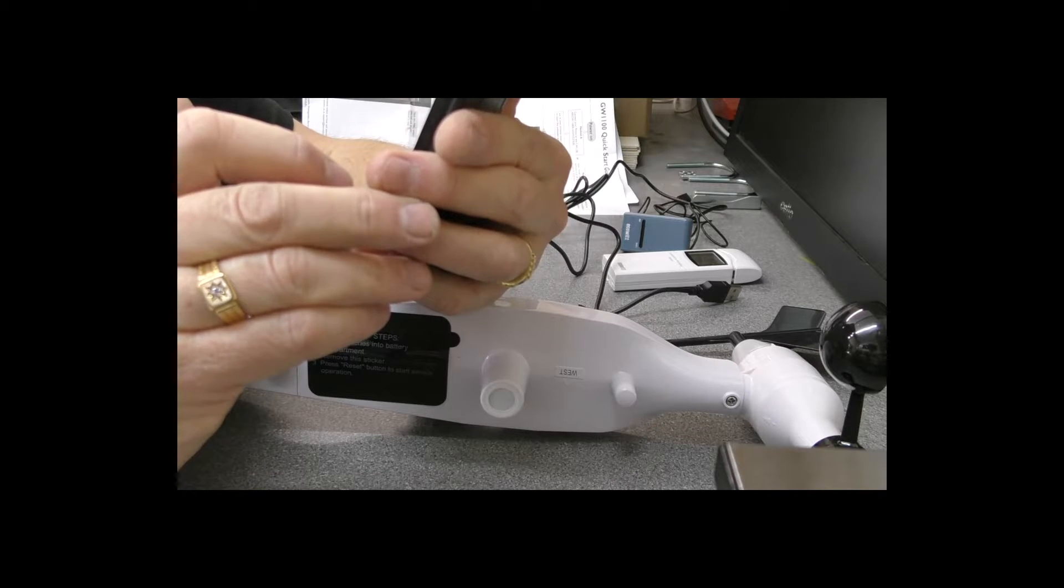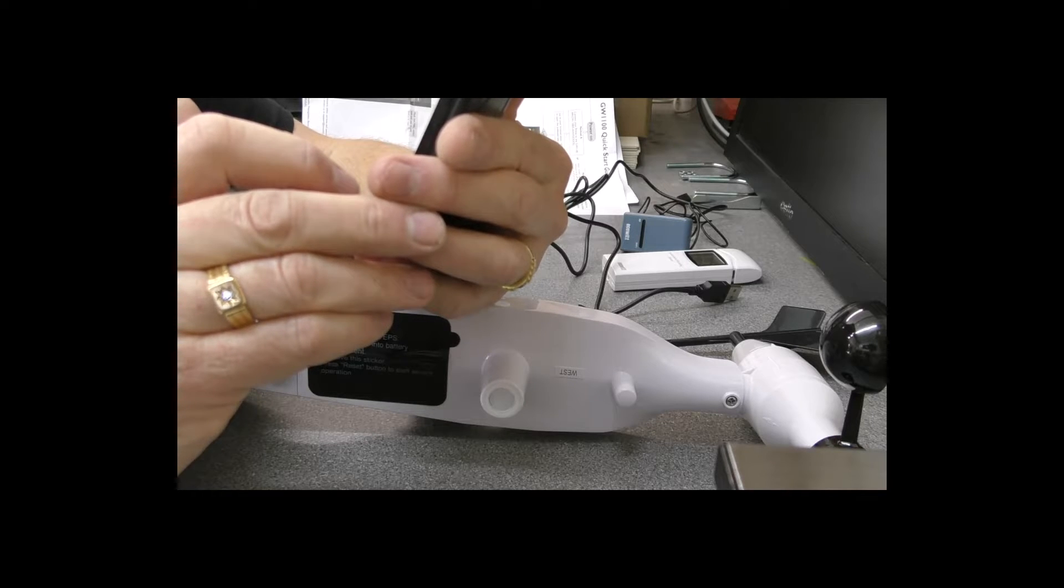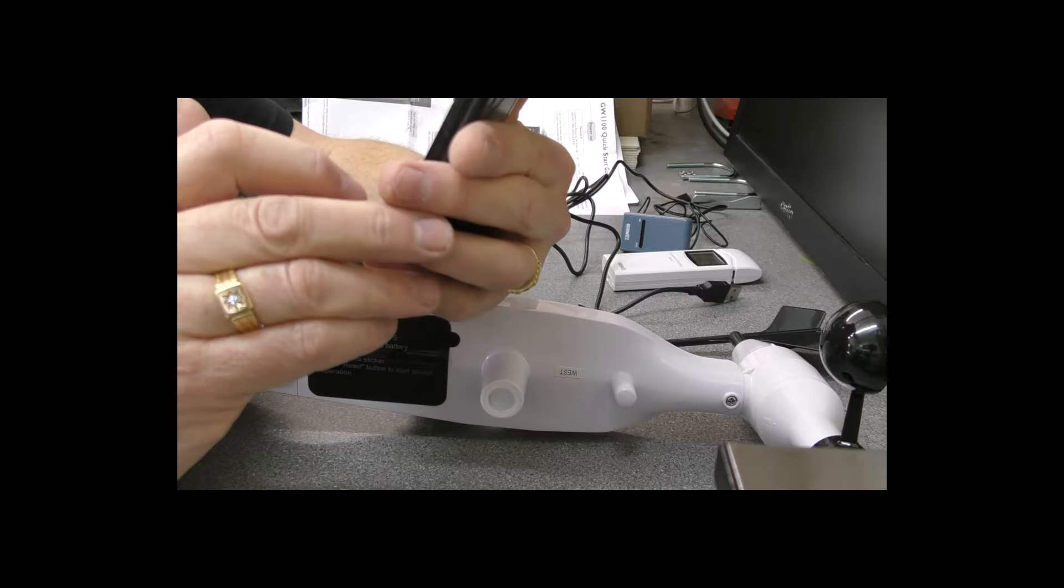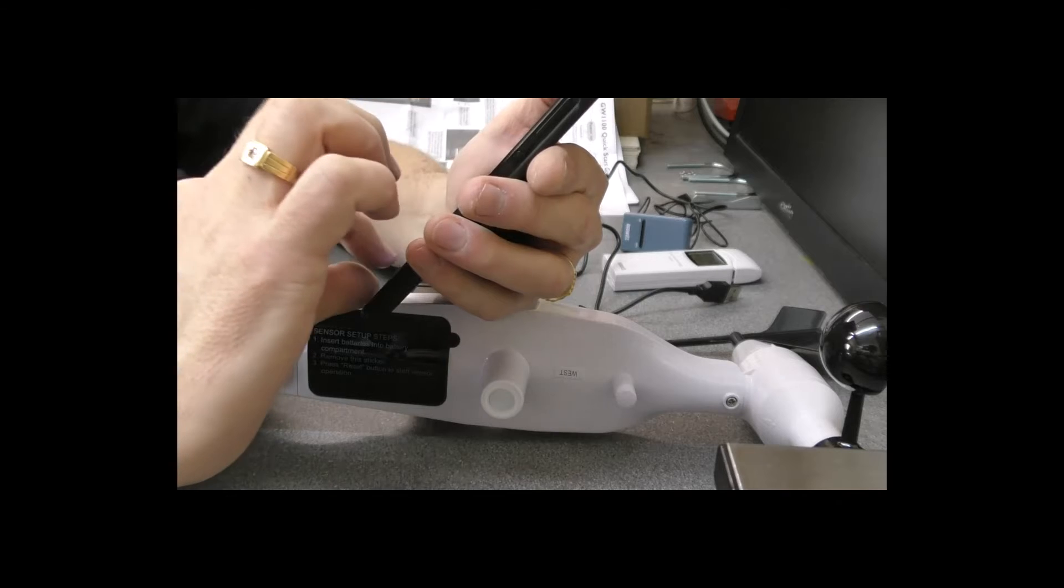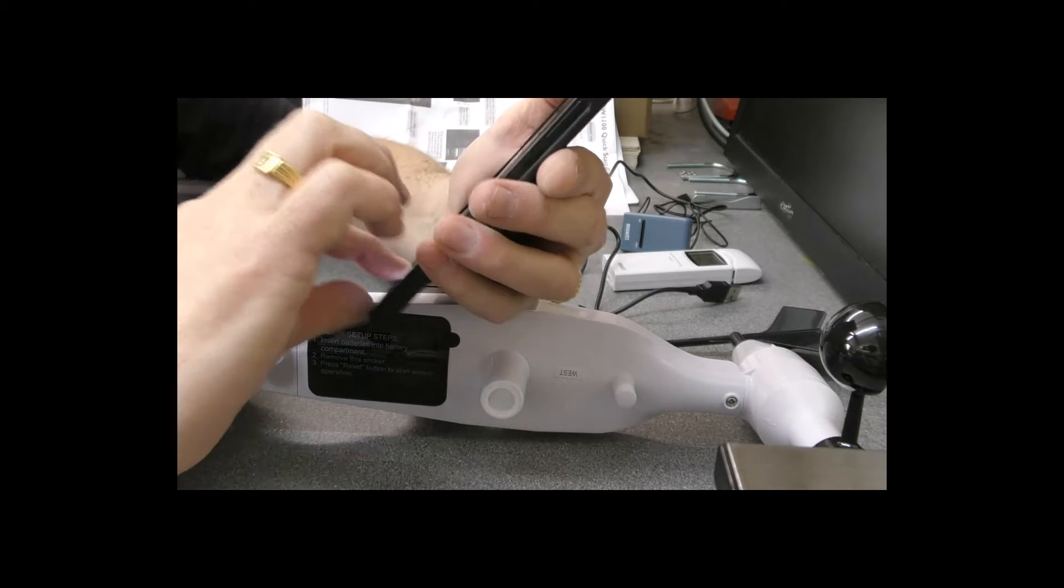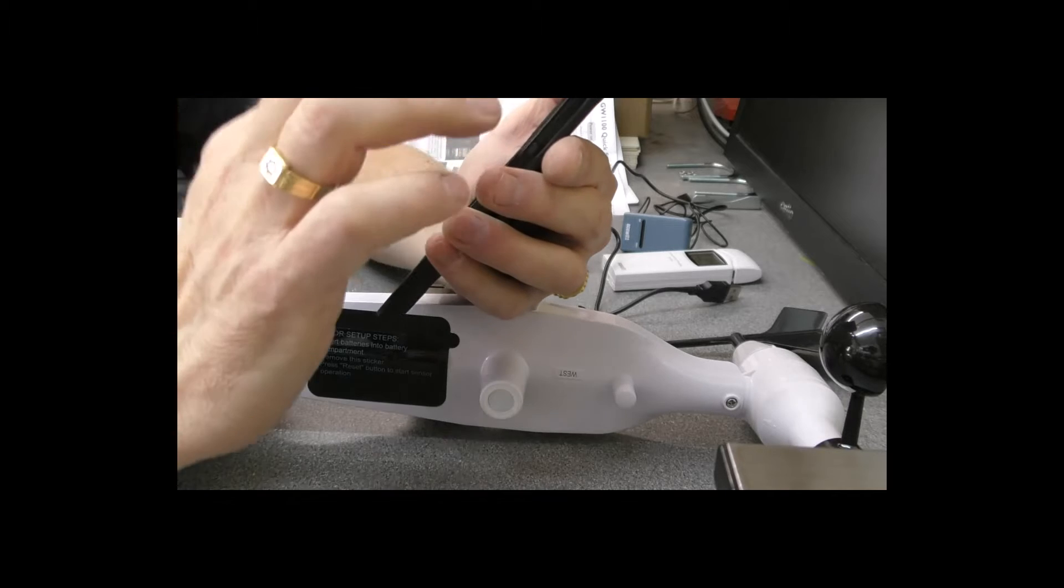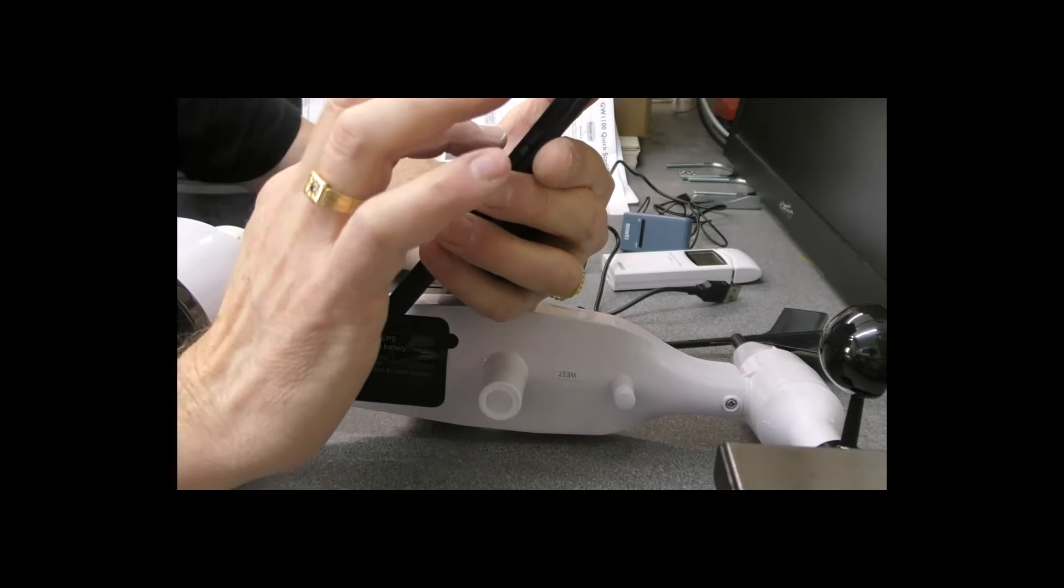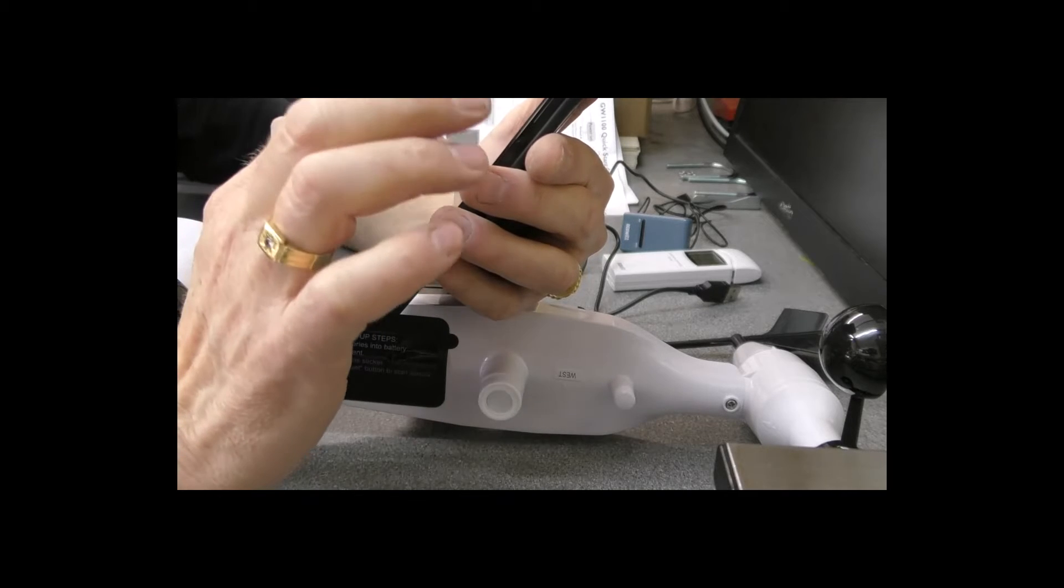Before going further, make sure the app has Wi-Fi and precise location permission enabled. Turn off your mobile network data service and make sure your Wi-Fi works on 2.4 gigahertz band. We're going to go into settings of the phone and turn off the data.